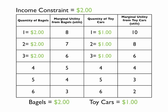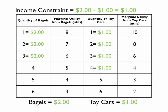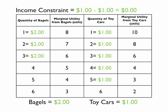Let's go back to $2 as your income constraint, with three bagels and three toy cars already purchased. You can purchase the fourth toy car at $1, leaving $1 to spend, and then purchase the fifth toy car at $1, leaving $0 to spend.